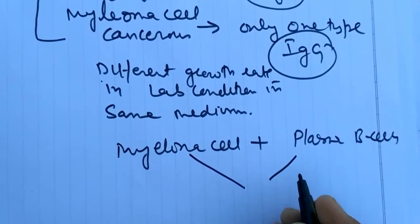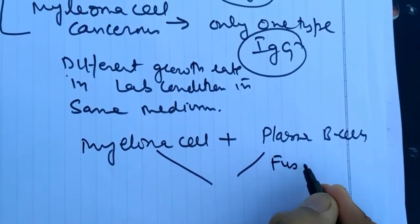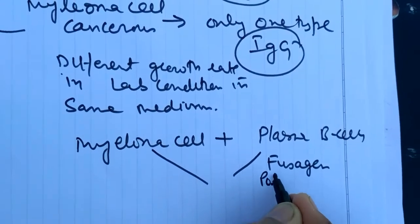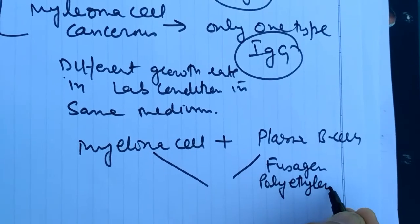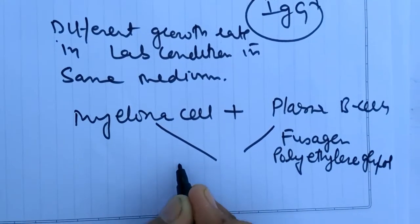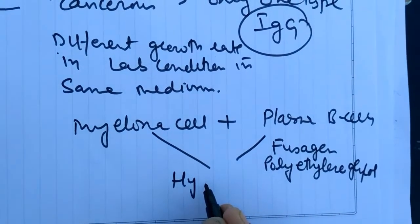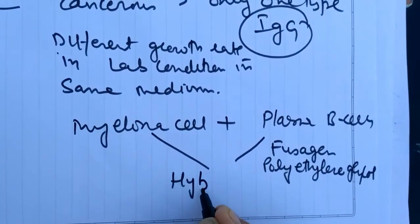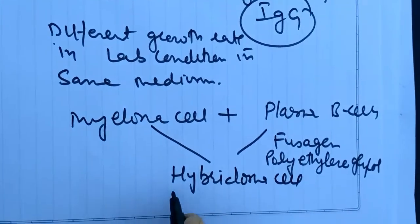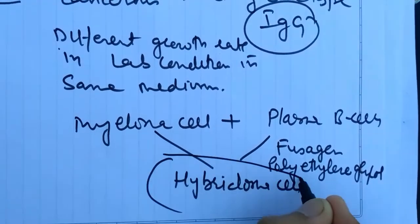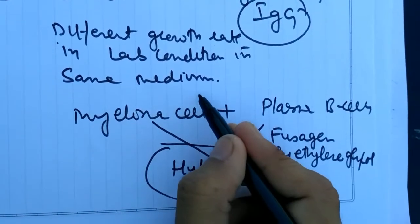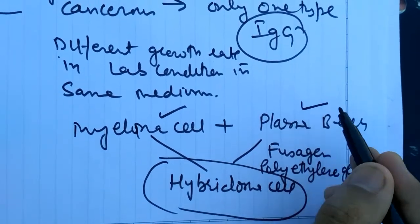Here we use polyethylene glycol. It produces a hybrid cell, that is hybridoma. This hybridoma cell has the properties of both types of cells, that is myeloma cells as well as the plasma cells.